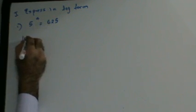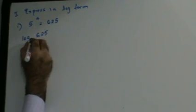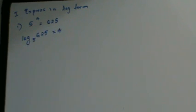Let's see a couple of sums based on this. Express in log form: I have 5 to the power of 4 is 625. Using the first principle, if I have to write this in terms of log, this will be log 625 to the base 5 is equal to 4. The base stays as the base, and the index becomes the answer.